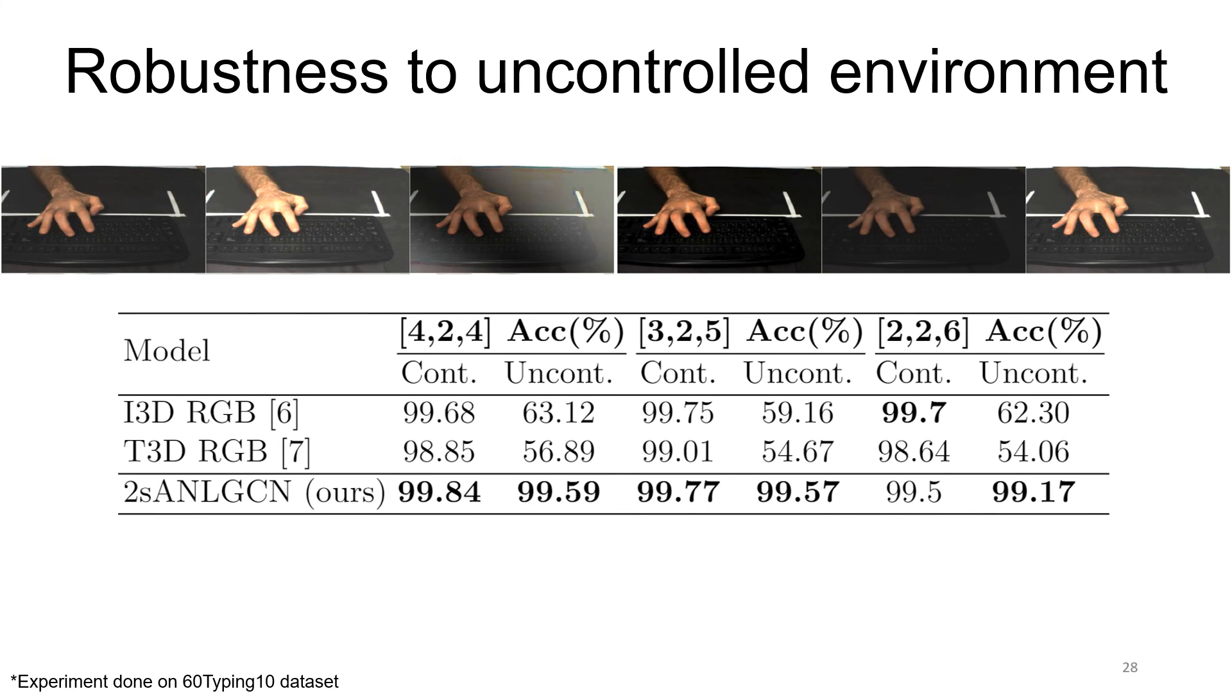We mentioned before that operating under uncontrolled environment is an essential property of identification methods. While the RGB-based state-of-the-art models achieve good results under controlled environment, their accuracy drops when tested under uncontrolled environment. Our method is far more robust since we operate on lower dimension space, which is less sensitive to environmental conditions.